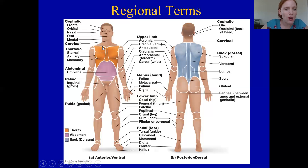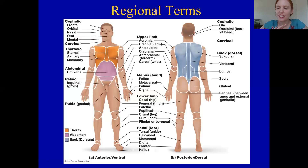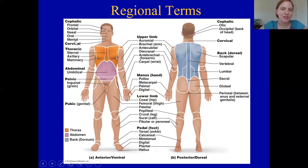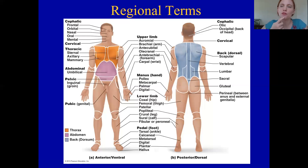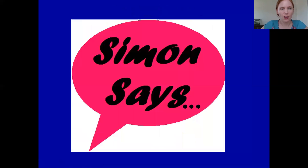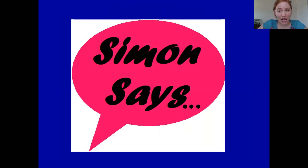One specific term people trip up on is the chin. For some reason, people have a really hard time accepting that the chin region is called the mental region. It seems like the forehead should be the mental region, but no — that's frontal, and the chin is mental. I'm going to do a little bit of a Simon Says when we come together as a Zoom group, but please practice this.